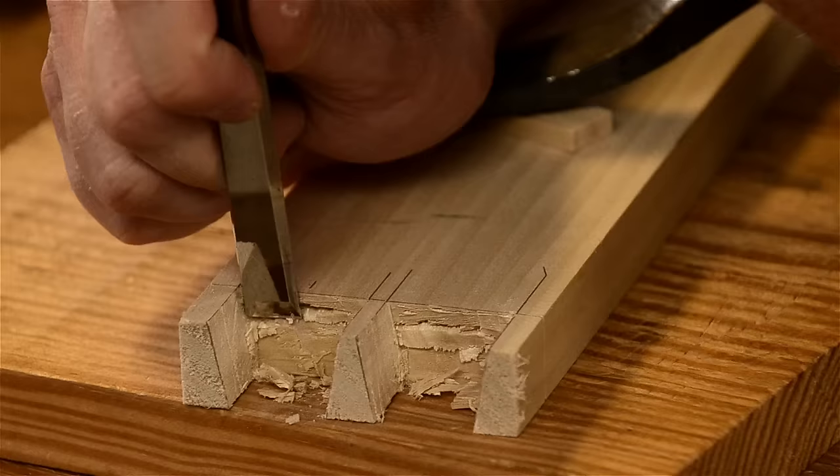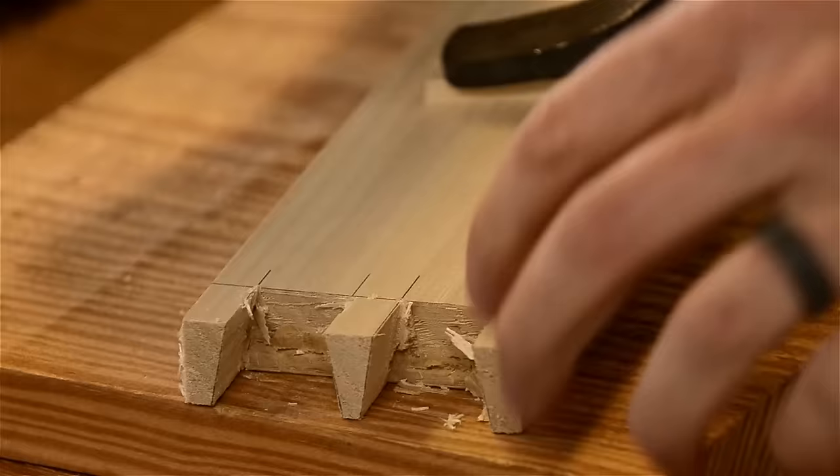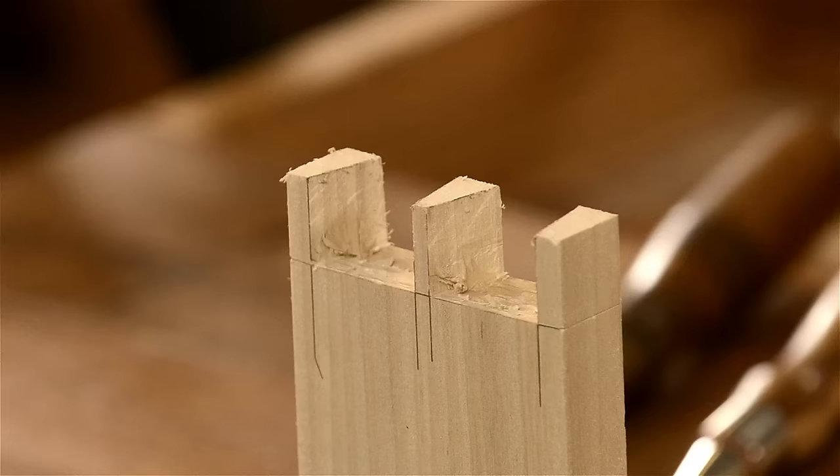Once the chopping is finished, I use a smaller chisel to clean up the gunk inside the joint. Again, I try to remove all the wood up to the pencil lines, but I try not to go over the pencil lines. You can also use a larger chisel to pare the rough sides of the pins and half pins down to the pencil lines.